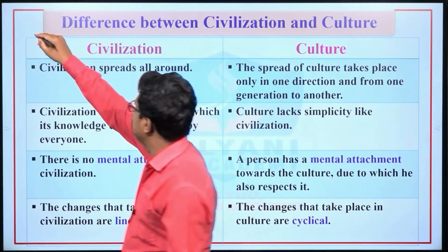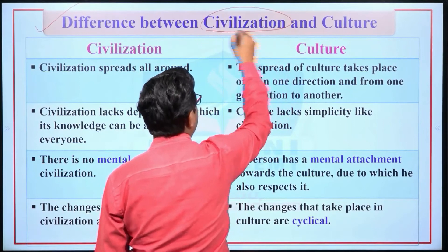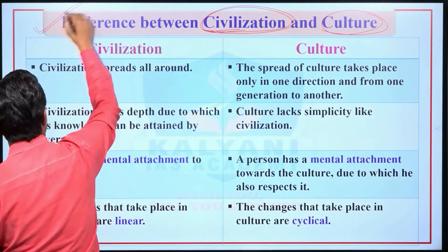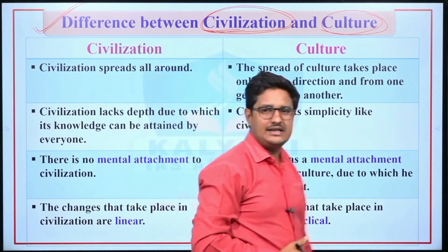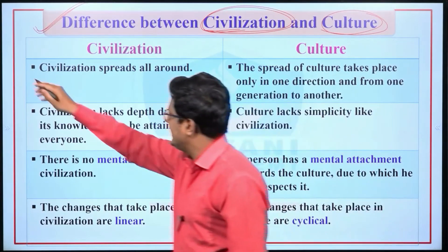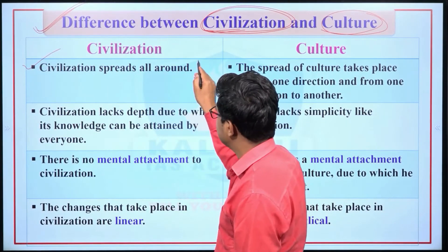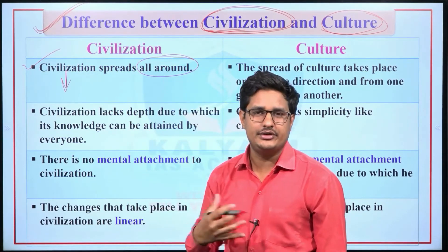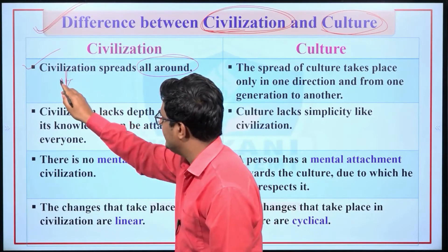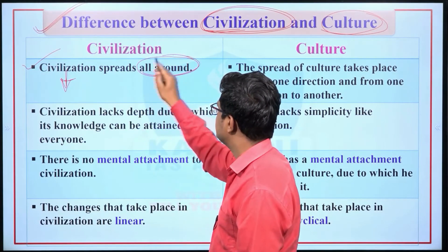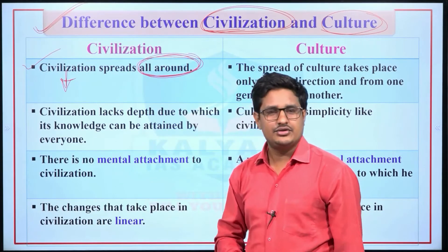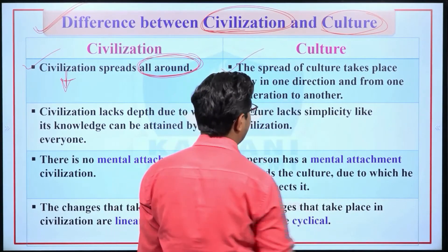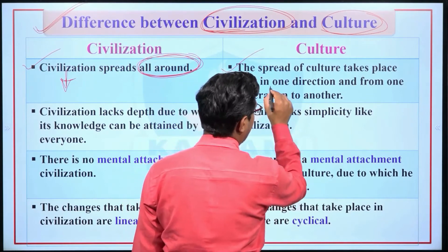At last, we will study the difference between civilization and culture. First difference: civilization spreads all around. Since civilization has the inherent quality of utility, it spreads all around. Whereas the spread of culture takes place only in one direction — from one generation to another generation. We provide our ideas, beliefs, art, and literature only to the next generation.